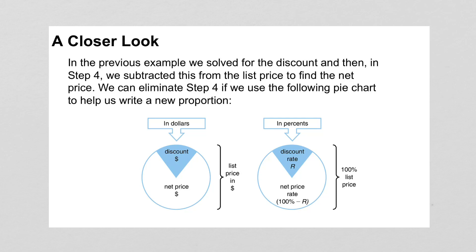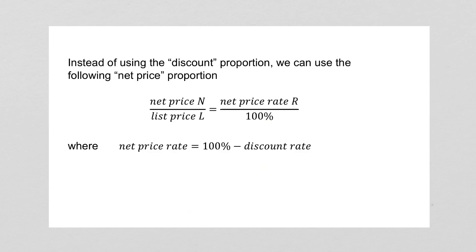In the previous example, we solved for the discount and then subtracted from the list price. We can eliminate step four if we use a pie chart to help us draw a new proportion. Basically, instead of putting your discount in the percent spot, you put 100 minus the discount.